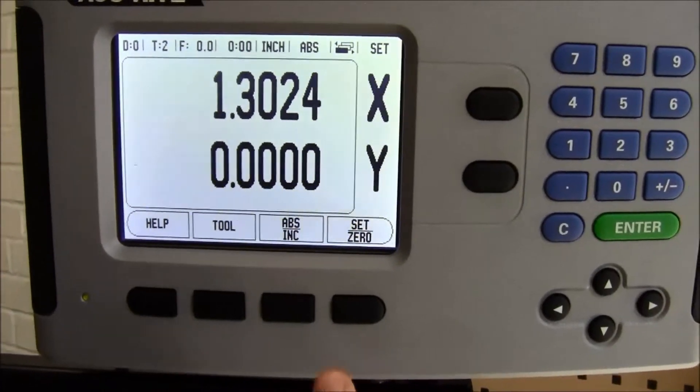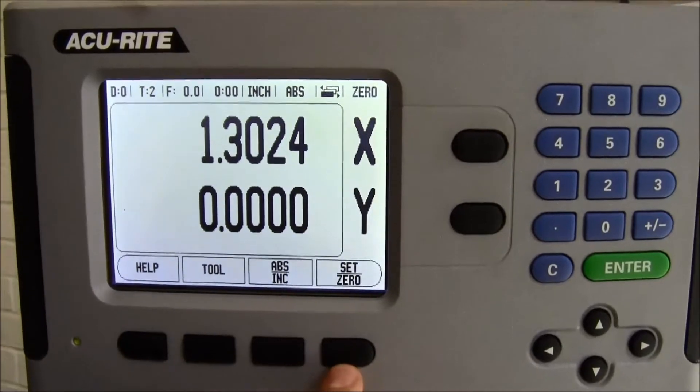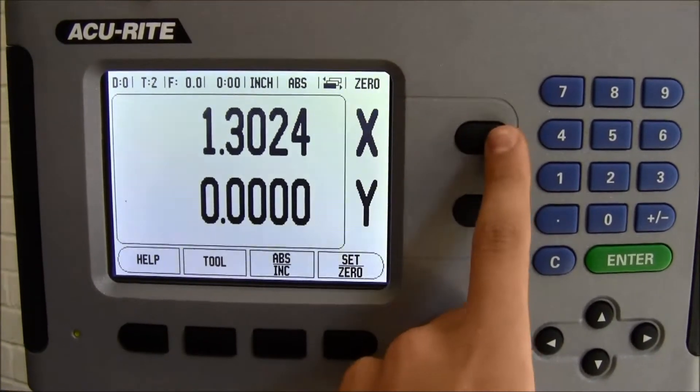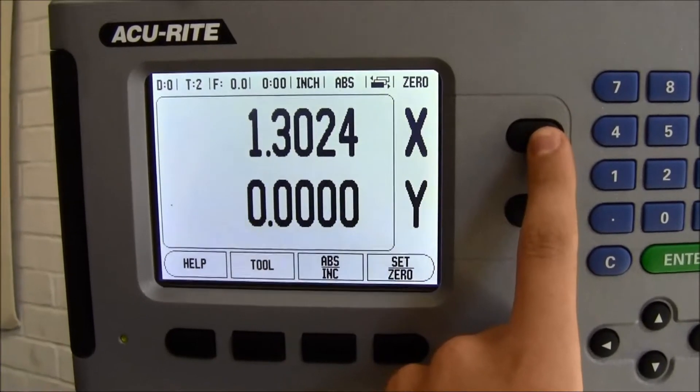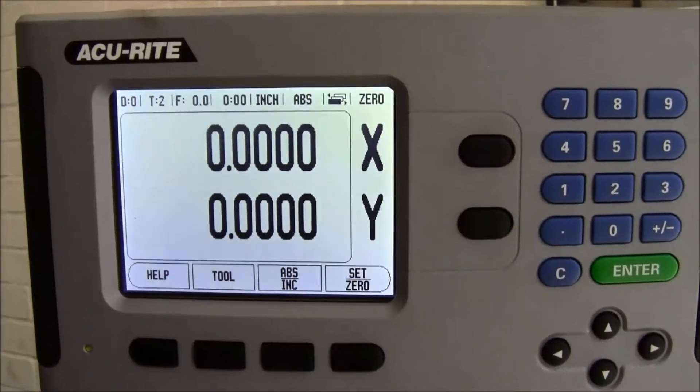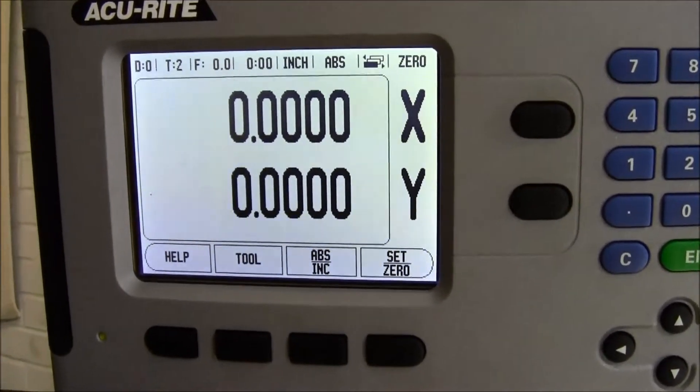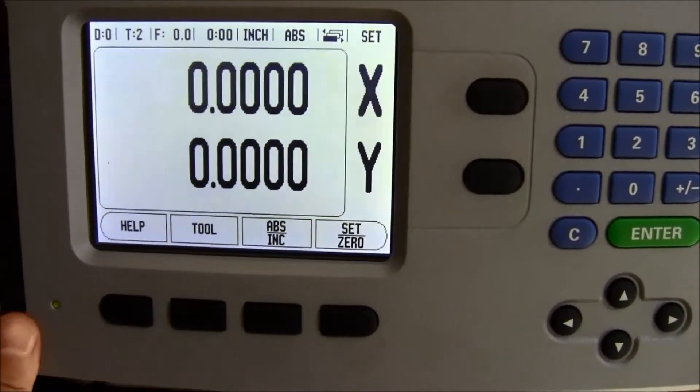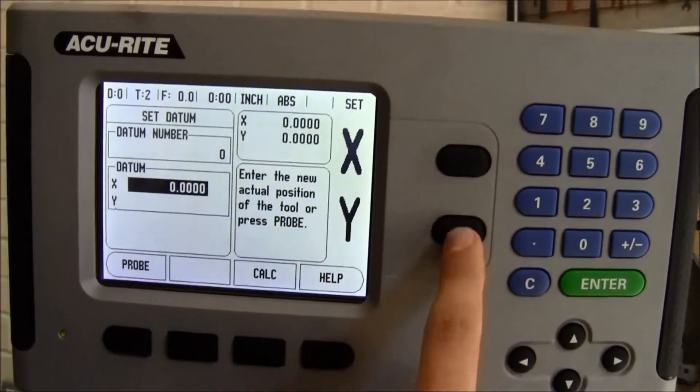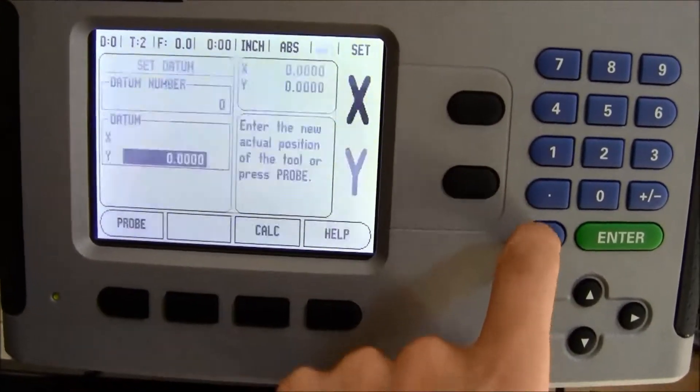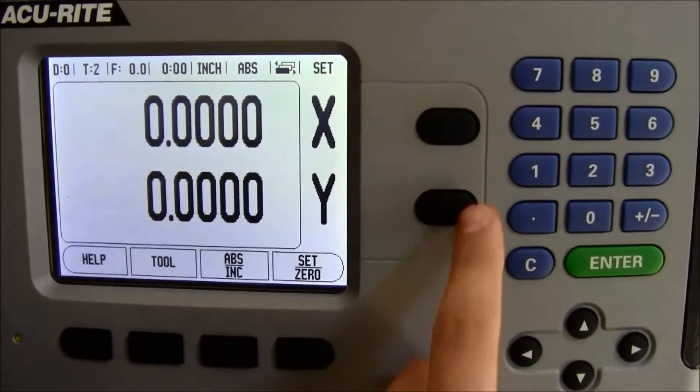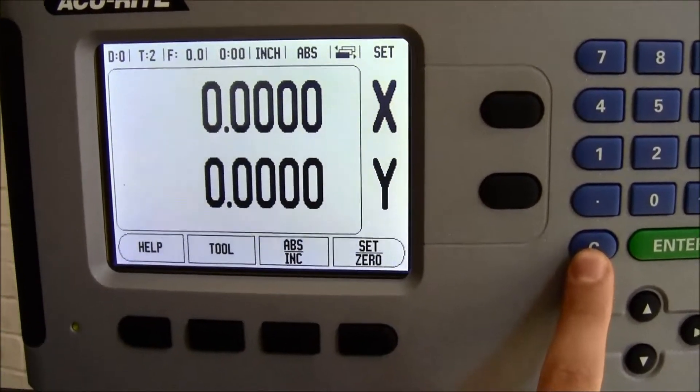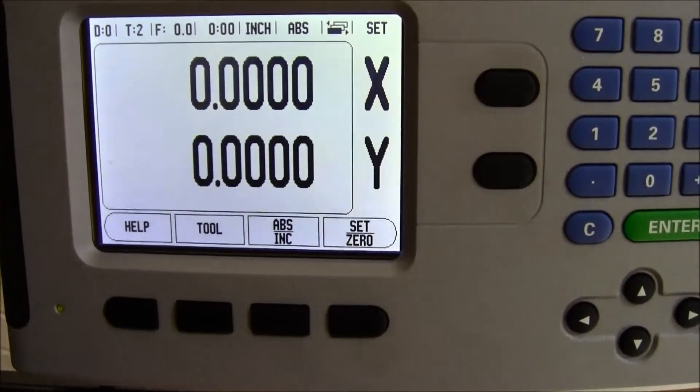To do this, press the set zero button until the top corner reads zero. Then press the button alongside the corresponding axis. This will set that axis measurement to zero. Then press the set zero button again to lock that zero so that pressing these buttons again will not disturb the measurement. If you do get to a menu you do not need, press C to clear and return back to the base screen.